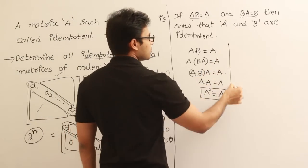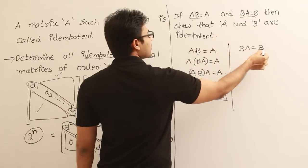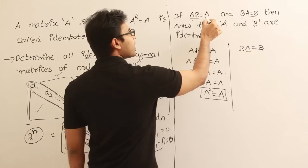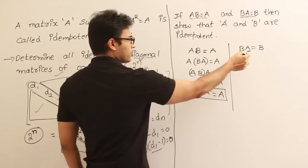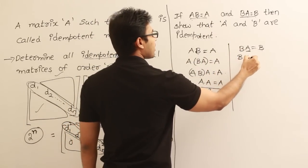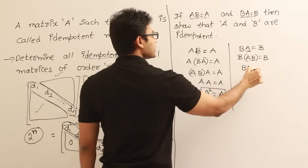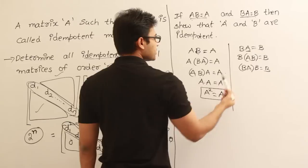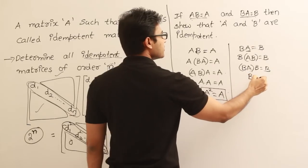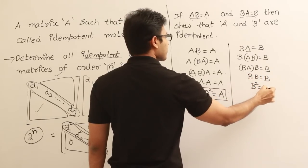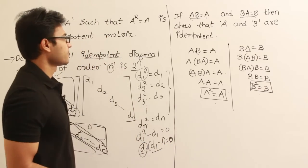Similarly, we can show B is idempotent. We know BA equals B. In place of A, we substitute AB from the first equation, giving B times (AB) equals B, which we rewrite as (BA) times B equals B using associativity. Since BA equals B, this becomes B times B equals B, that is B squared equals B. Therefore B is idempotent. So both A and B are idempotent.